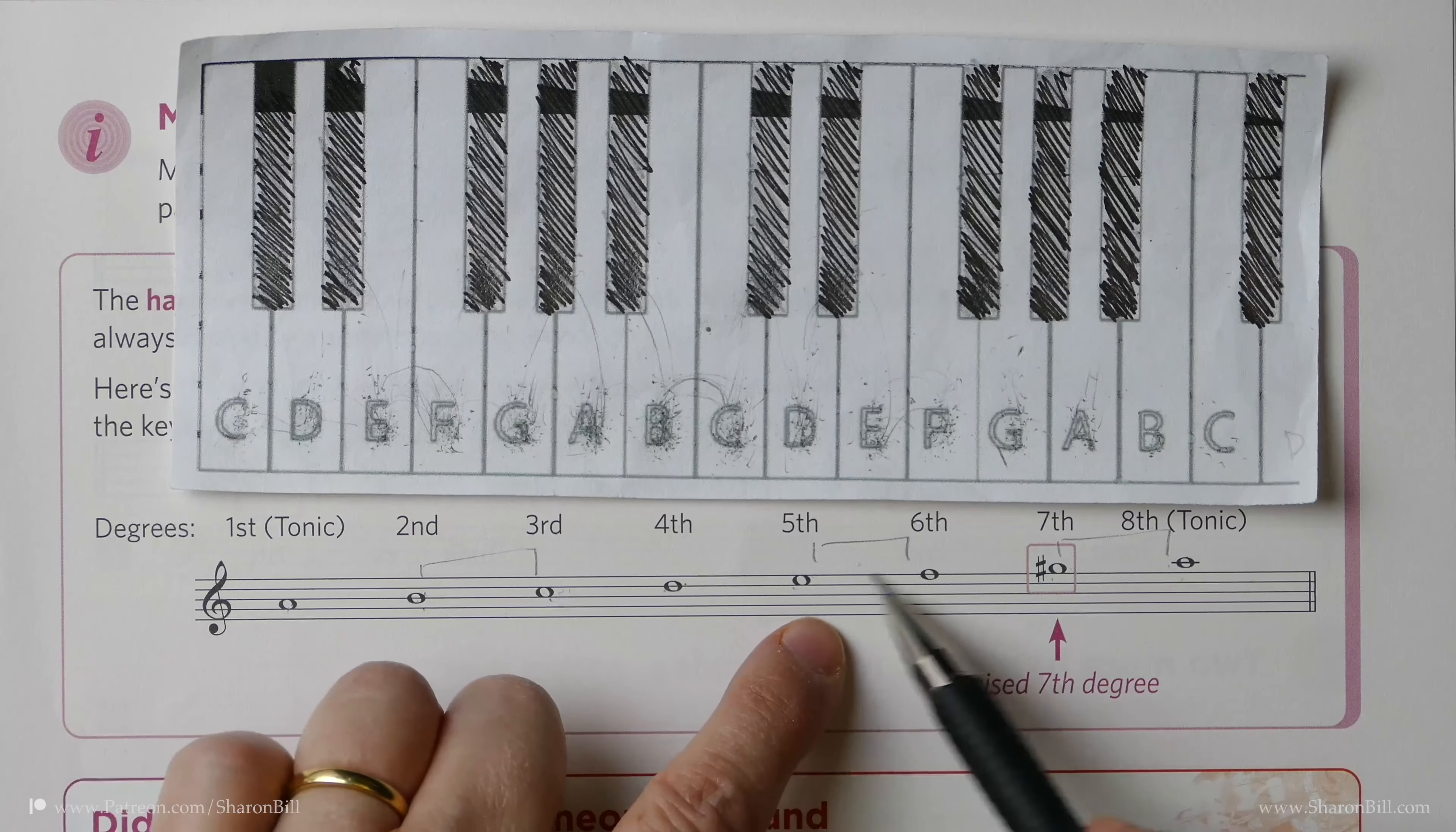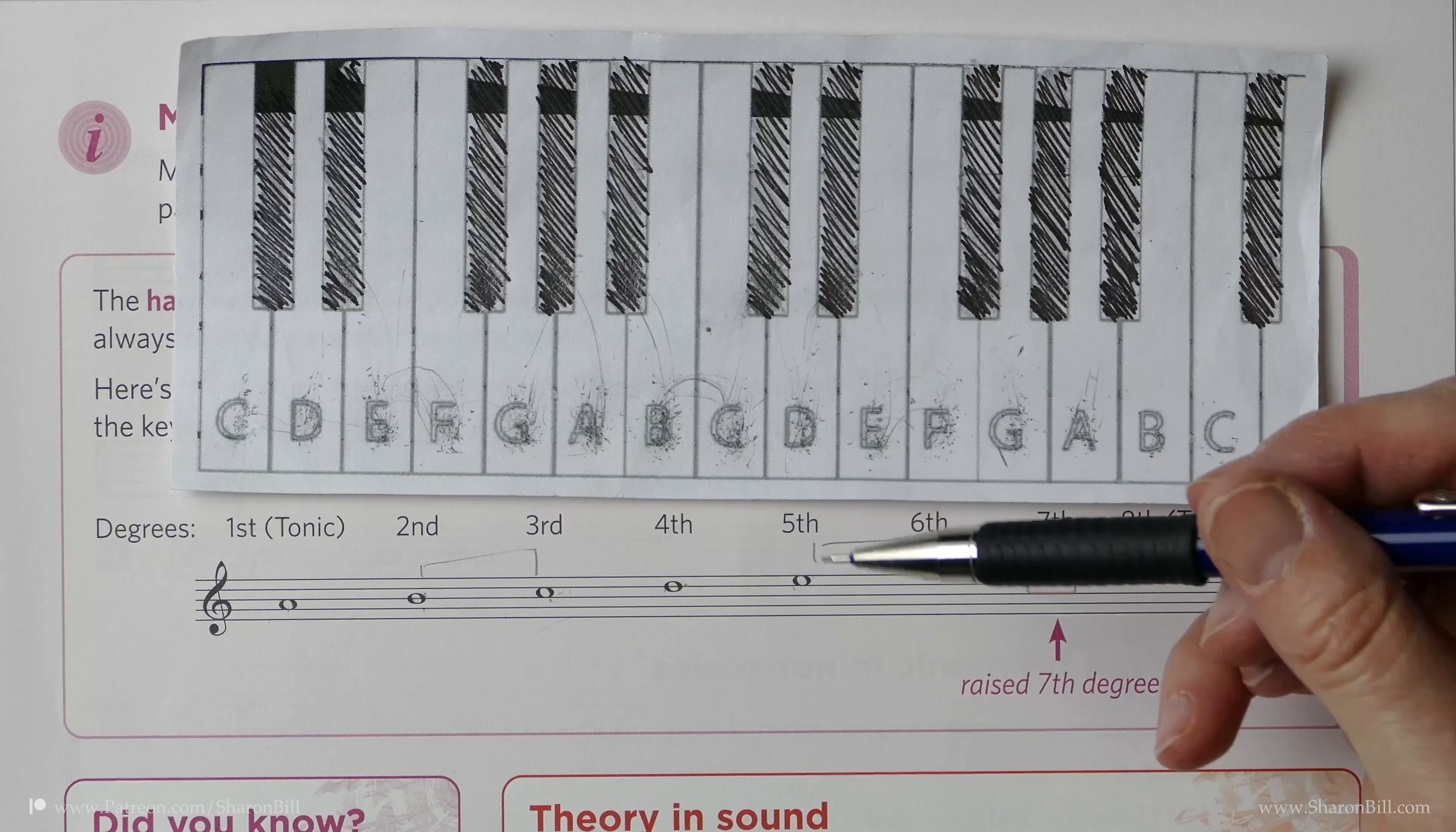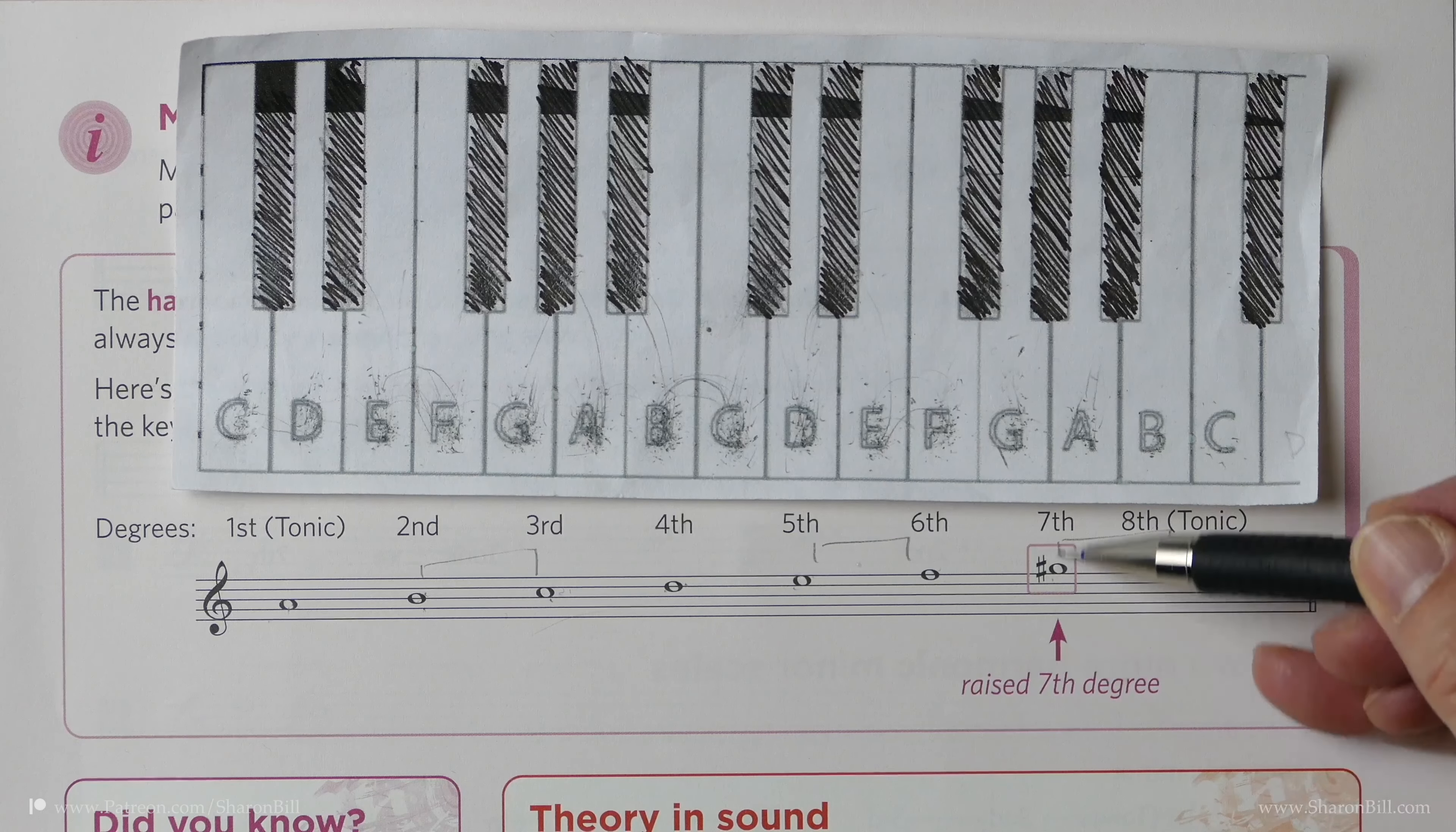So we can see that 2 to 3, 5 to 6, 7 to 8 are the semitones, and that's why it sounds different and that's why we have to have the related keys giving us the appropriate key signature and then we raise the 7th degree.